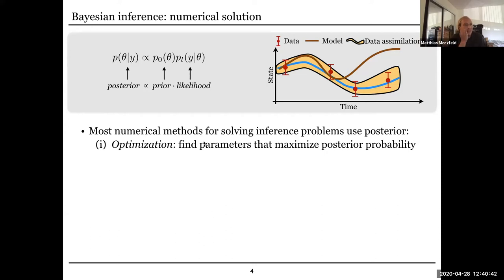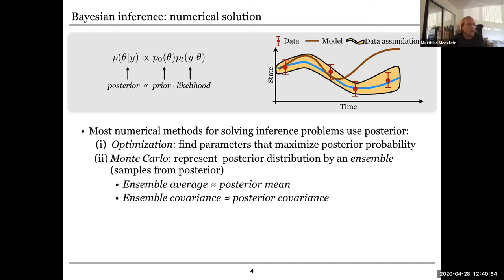This posterior distribution describes what in the cartoon would be the yellow cloud of possibilities the state could take on. Most numerical methods for solving inference problems are based on this posterior distribution. For example, you can do an optimization to find parameters that maximize the posterior, or a Monte Carlo approach where rather than finding one particularly good set of parameters, you represent the posterior distribution by an ensemble — samples from this distribution — with the hope that the ensemble average approximates the posterior mean and ensemble covariances approximate the posterior covariances.